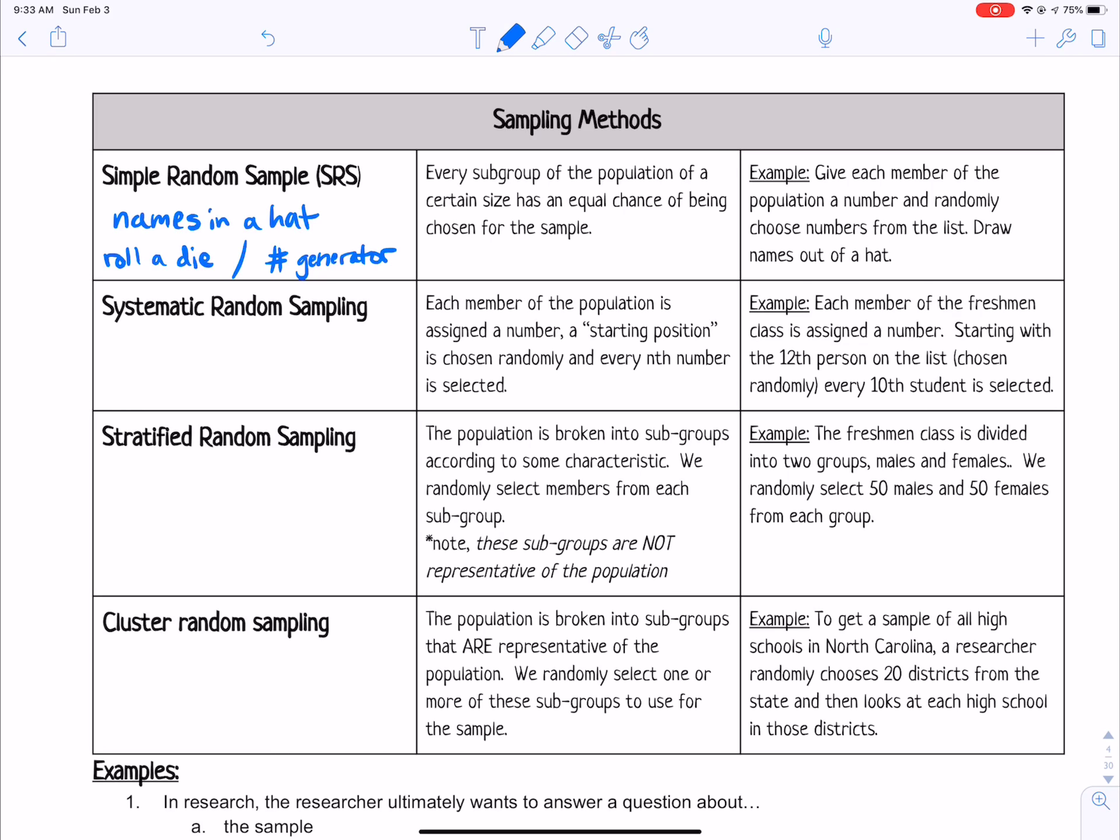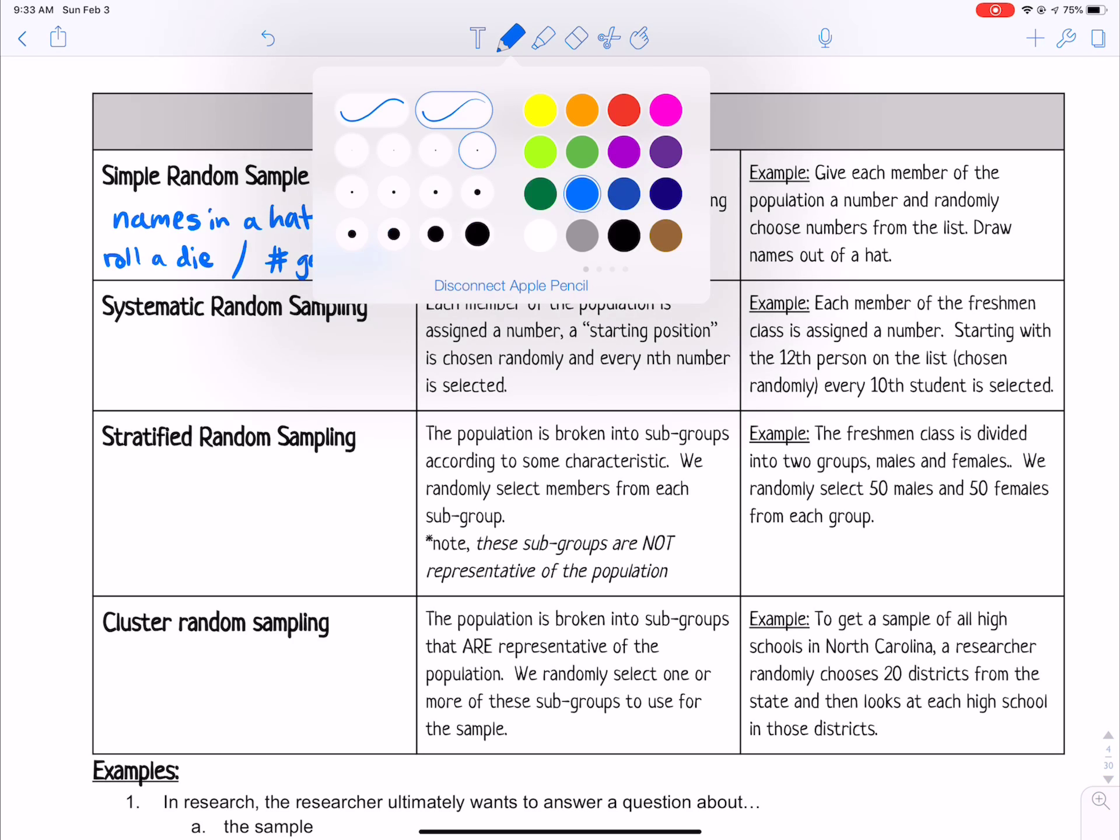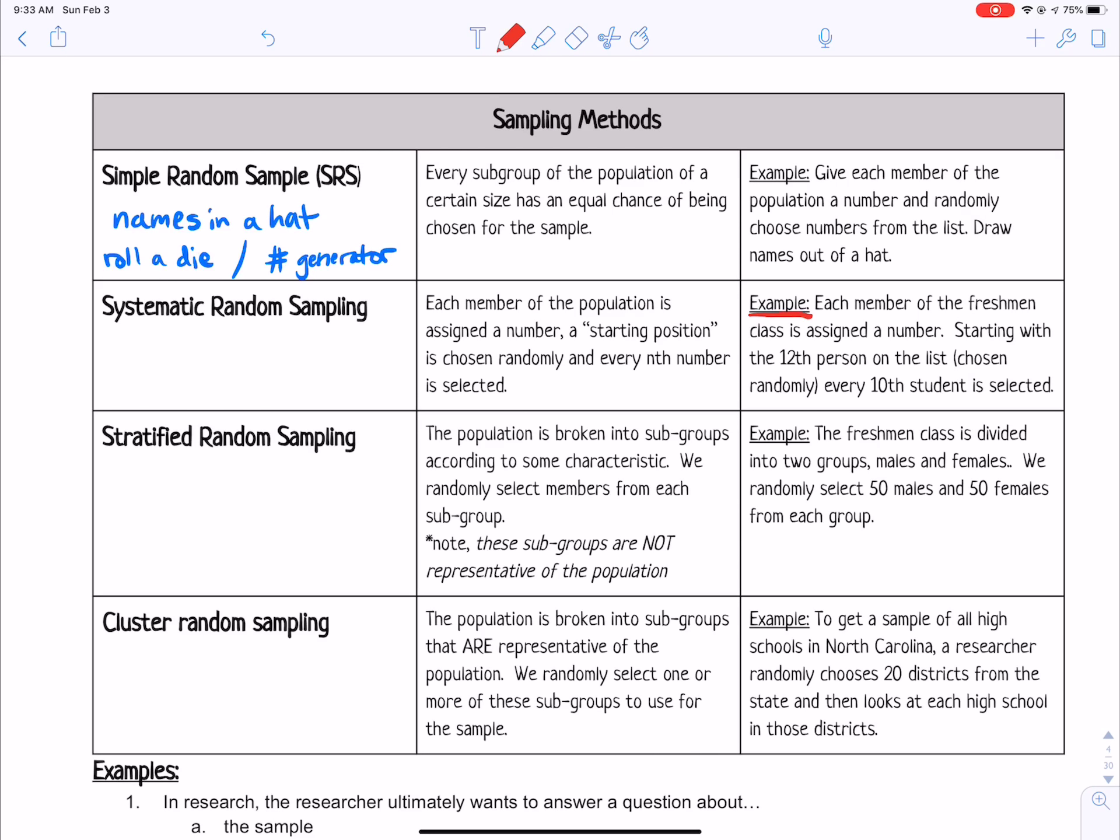Systematic random sampling is when you choose randomly the first person. So our example over here on the right says each member of the freshman class is assigned a number. Starting with the 12th person, which you'd have to choose that randomly, like maybe you rolled a die and you got 12.